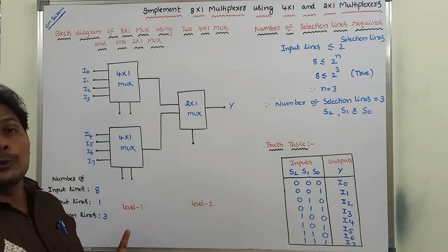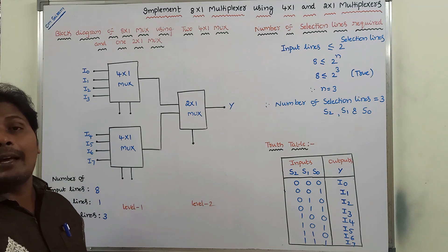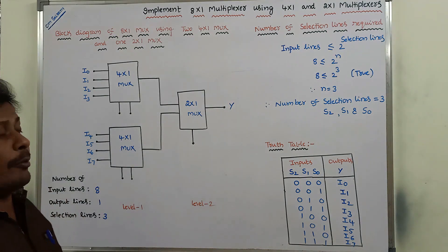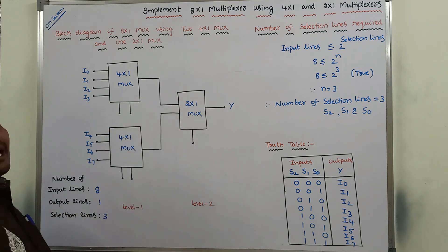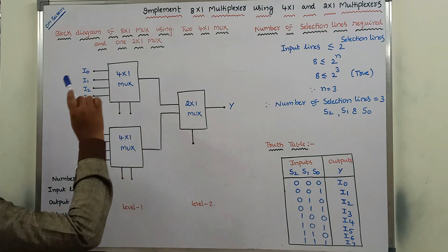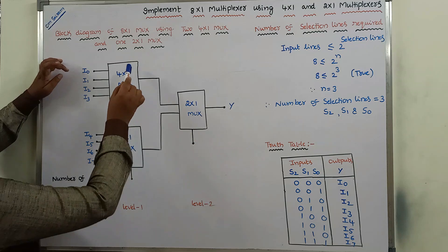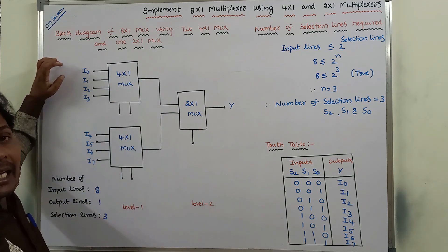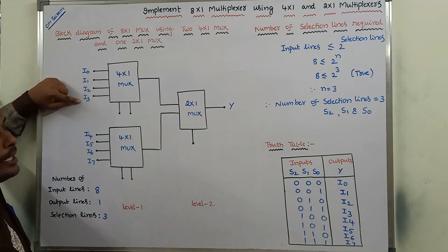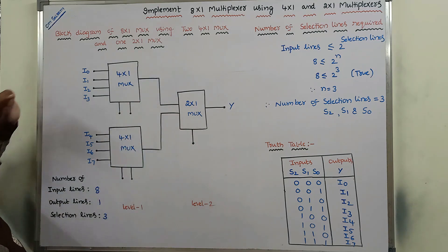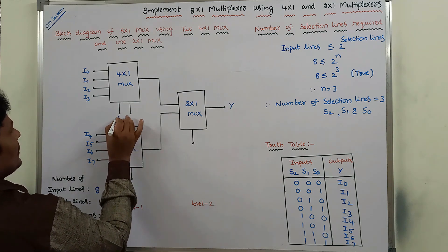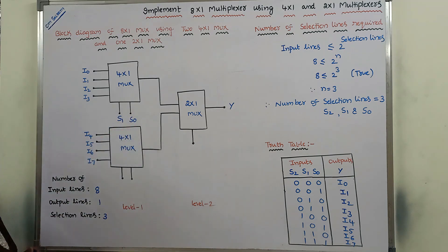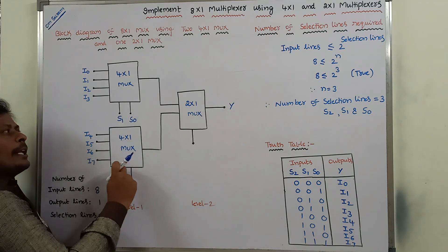In the first level, two 4 by 1 multiplexers are required. In the second level, one 2 by 1 multiplexer is required. The first 4 by 1 multiplexer in level 1 takes 4 inputs: I0, I1, I2, I3, and produces 1 output. To select only one input among these 4, we require 2 selection lines: S1 and S0.